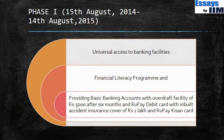Jan Dhan Yojana runs in two phases. The first phase runs from 15th August 2014 to 14th August 2015 — a span of one year. The target was universal access to banking facilities, meaning at least opening bank accounts. The government also launched a financial literacy program. In terms of credit, the scheme provides basic banking accounts with an overdraft facility of Rs. 5,000 after six months.